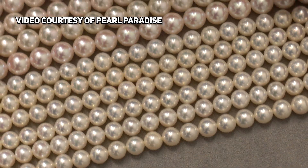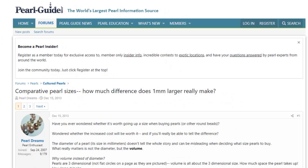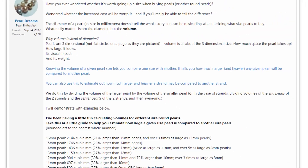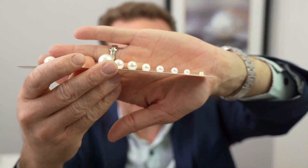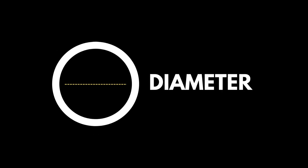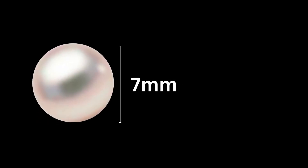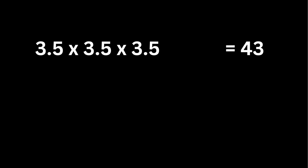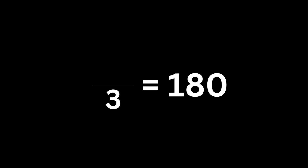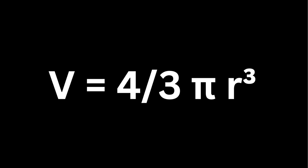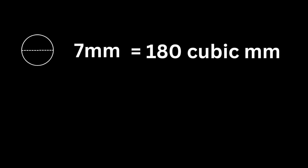A question I get a lot is: is there really that much of a difference in a millimeter? Does it make sense to go up a millimeter? Is anybody going to be able to tell the difference? Yes — there's a math formula. A friend on Pearl Guide, Loretta, known as Pearl Dreams and the admin of Pearl Guide, posted this formula a few years ago that I still use today. It calculates the volume of a pearl instead of just the millimeter size. Take a 7mm pearl, divide by two to get the radius — that's 3.5mm. Cube 3.5, multiply by pi, multiply by four, then divide by three to get the volume. A 7mm pearl has a volume of approximately 180 cubic millimeters.